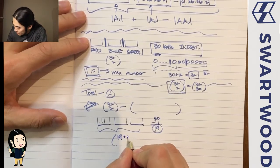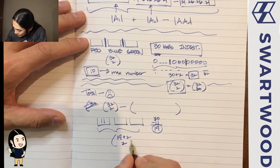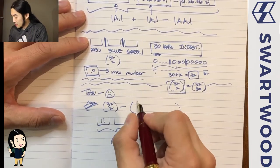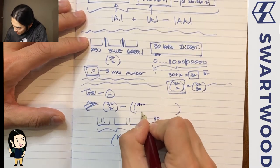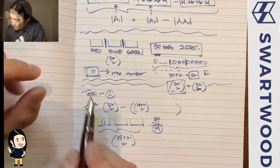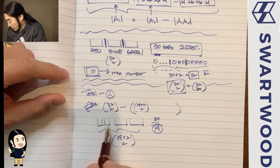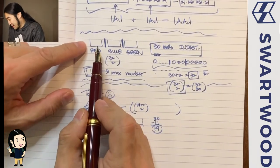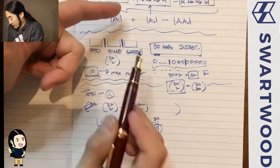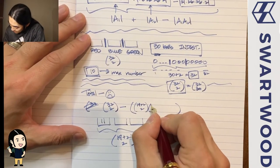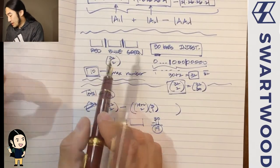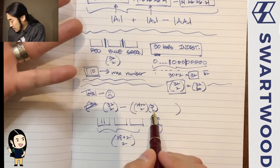That counts arrangements guaranteeing at least one urn is over the limit. We arbitrarily picked the red urn to be over, but it could be red, blue, or green — so multiply by 3 (or 3 choose 1). But now there's a slight twist: could two urns both be over the max simultaneously?